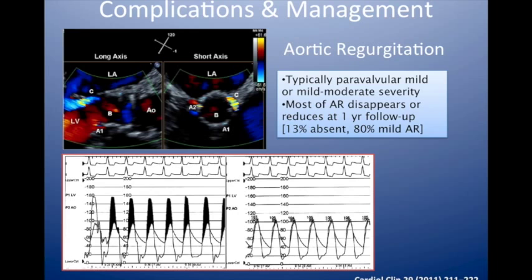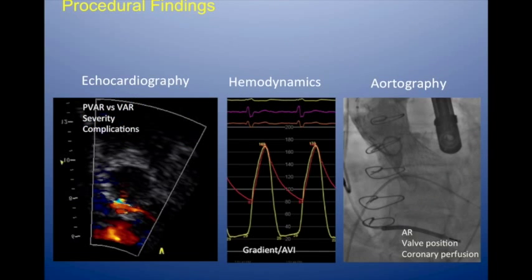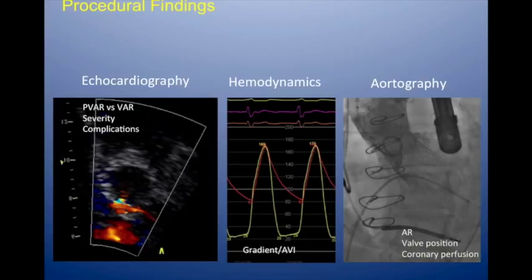We do an aortogram to test for regurgitation, but it's hard to tell if it's valvular or paravalvular — we need echo to tell us that. We also check valve position, how deep it is in the LVOT. We check coronary perfusion. Then via echo we want to know what's happened to the mitral valve, whether there's a pericardial effusion, and what LV function is like.